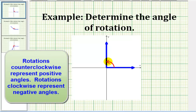One of the most important features about an angle in standard position is this arrow here, which indicates how much rotation has occurred. So for this angle, it starts here, rotates counterclockwise, and stops here. So this rotation would be a 90-degree angle.